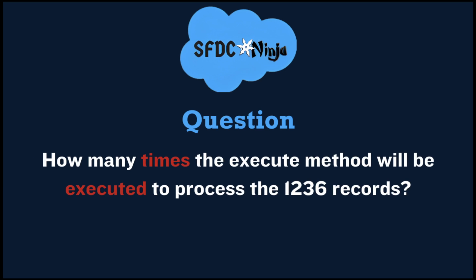The next question is: how many times will the execute method be called to process 1,236 records? It depends on the batch size configured when calling the batch class. The formula is: execution count equals total number of records divided by batch size. So if the batch size is set to 400, the execute method will be called 4 times.